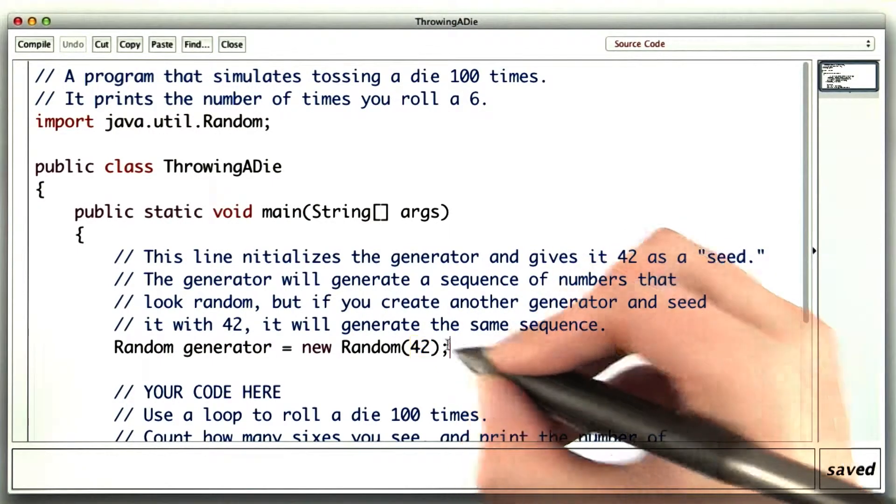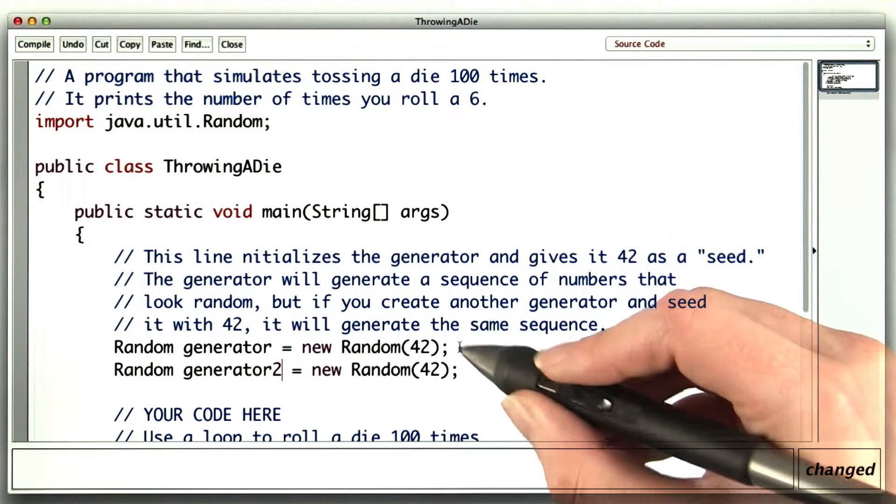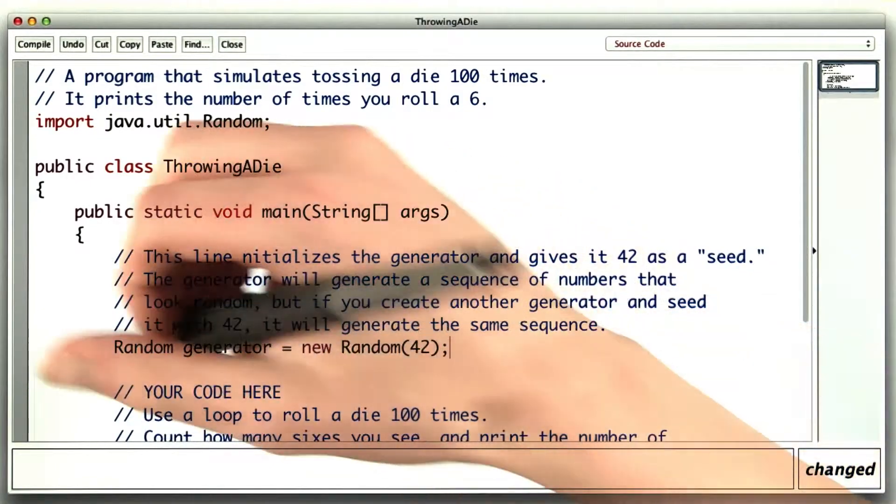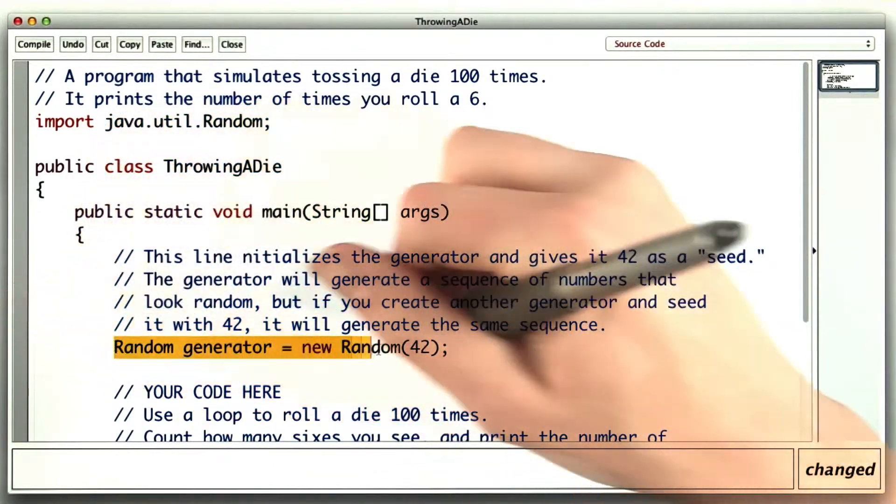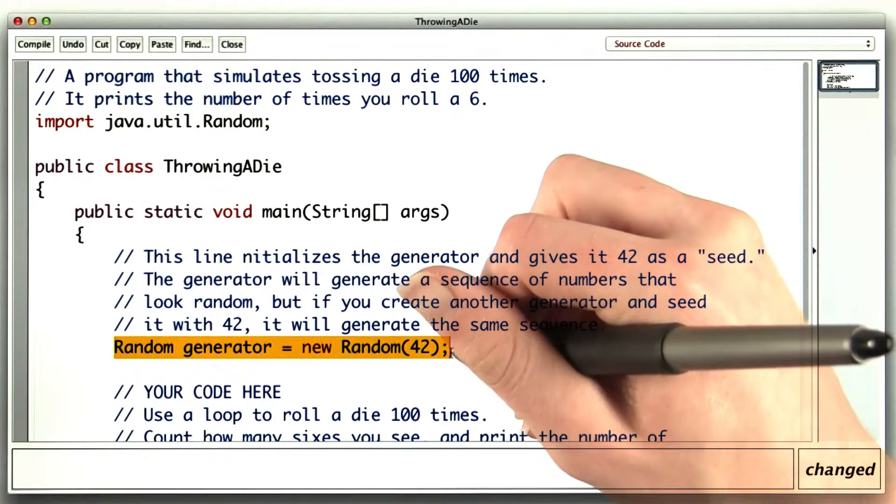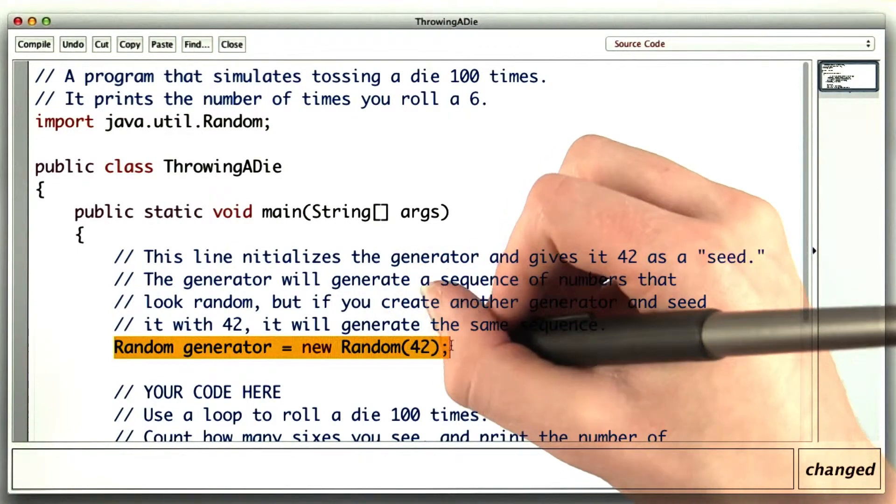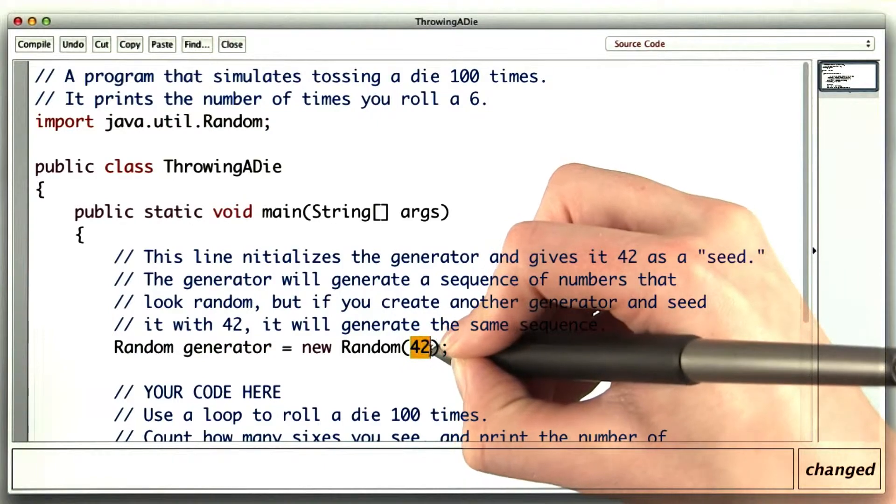So the sequence they generate will look random, but if you create another random generator like this, they'll both generate the exact same sequence. So all you need to know about that for now is to declare your random generator this way, because the grading code will be expecting a sequence of numbers generated with this seed.